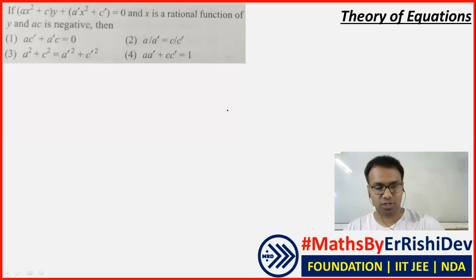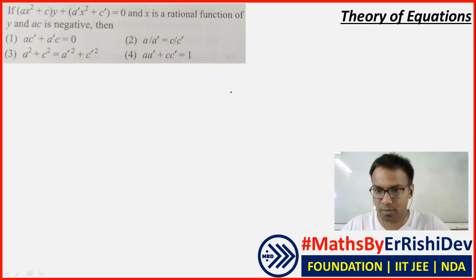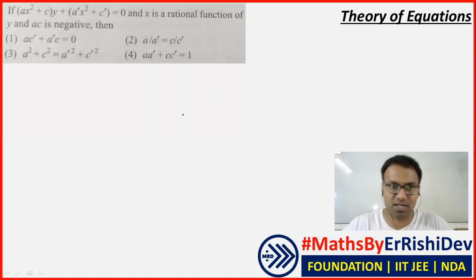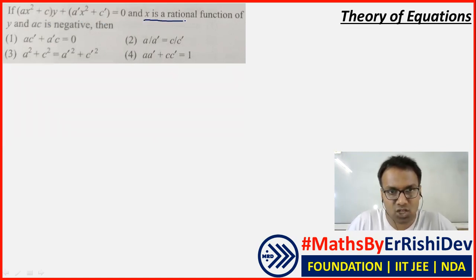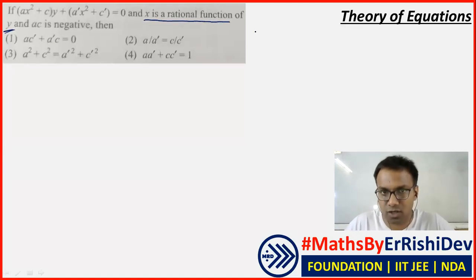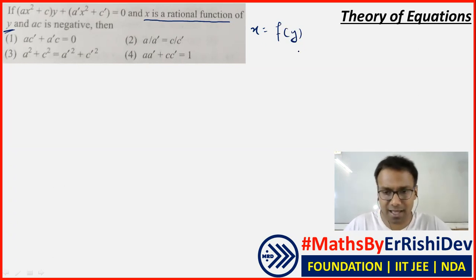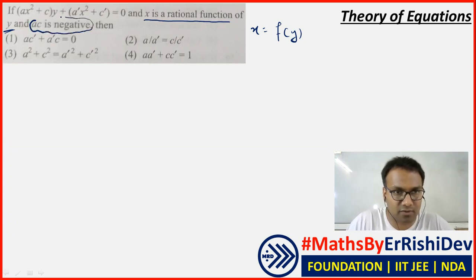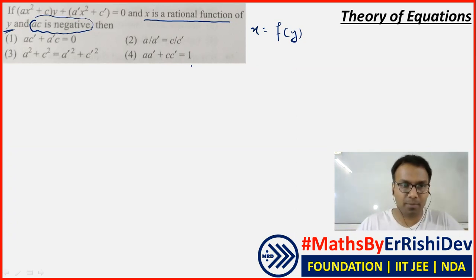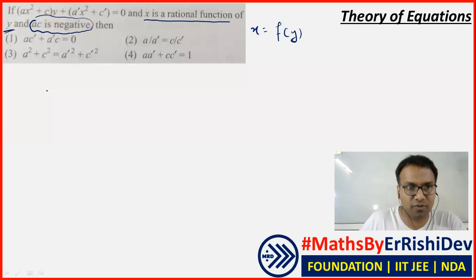Okay children, we have two theory of equations questions shared by one of your friends. It's a good question based on a good basic concept. I'm going to share the solution with you — if you have any problem with any concept, use the chat box. Let's see: if f(x,y) = 0 and x is a rational function of y, and ac is negative, then which of the options is correct?